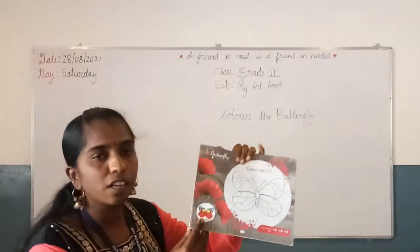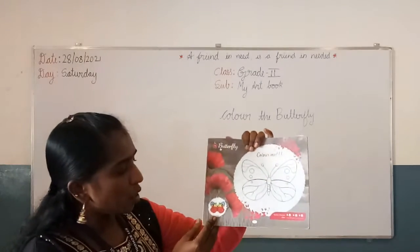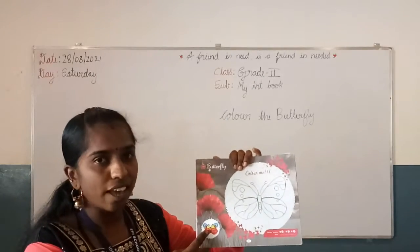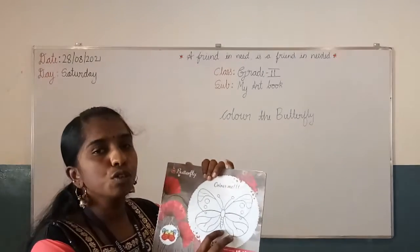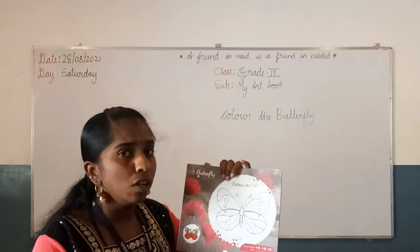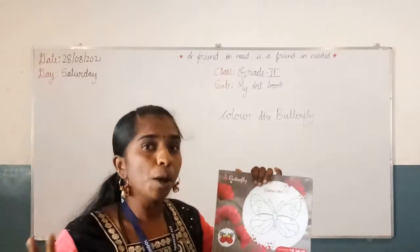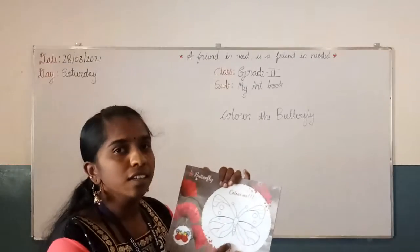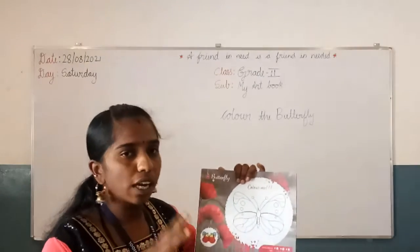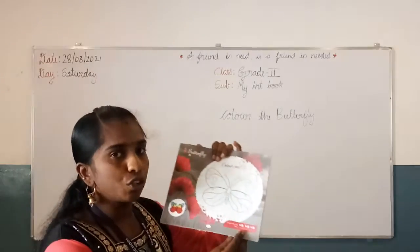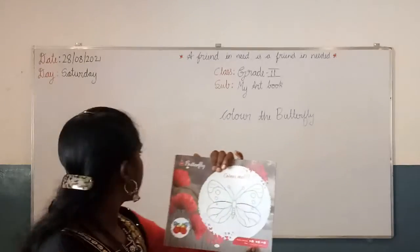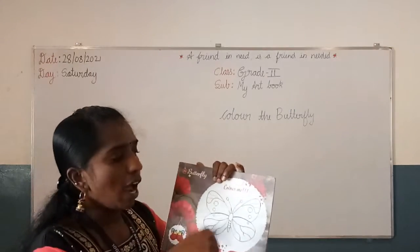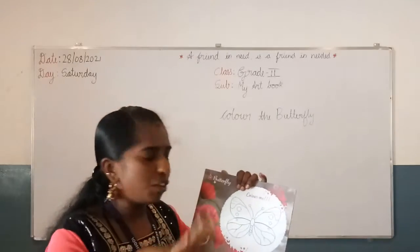See, they have given one example. They are using blue, yellow and red color — three colors. You should also use any colors, four or five colors, and make a colorful butterfly. Ok children, color the butterfly. You have to mention today's date — 28th, 2021 — and do the coloring of the colorful butterfly.